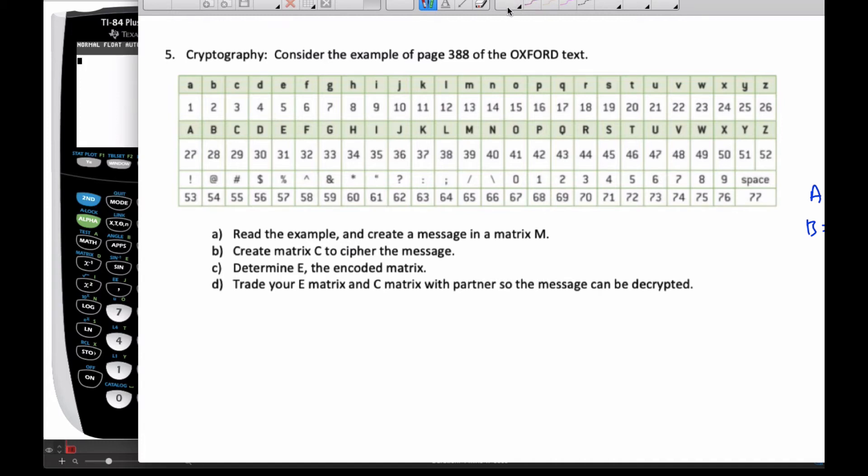Alright everyone, in this example we're going to try to do some simple cryptography. If you've read in the Oxford textbook on page 388, you're going to see this matrix or this code to cipher where each letter corresponds to a number and so on.